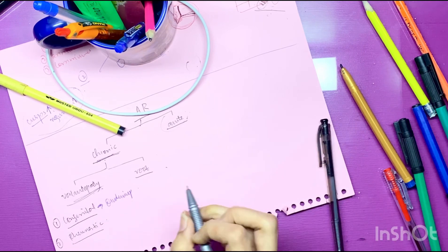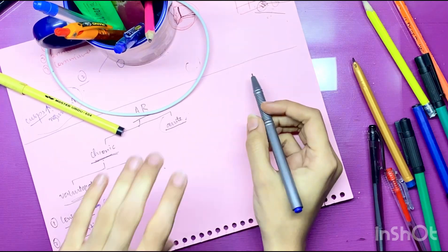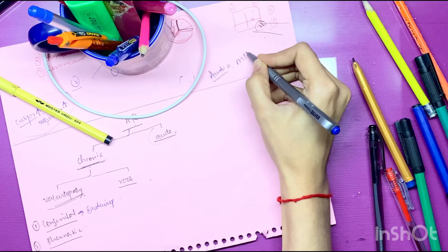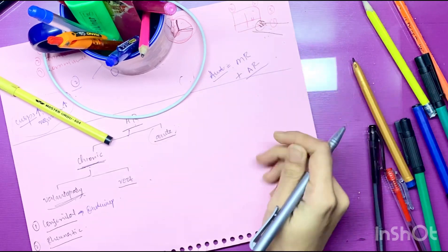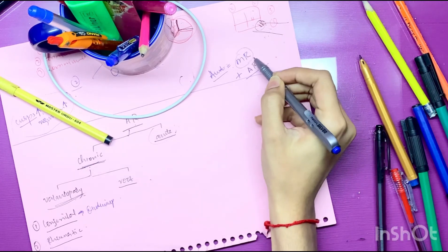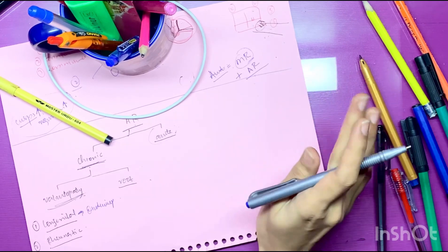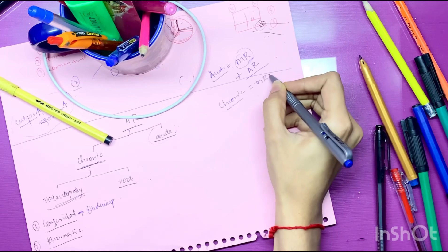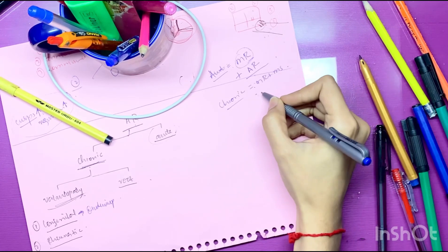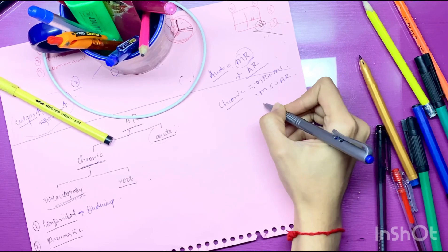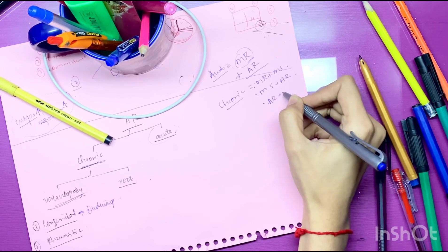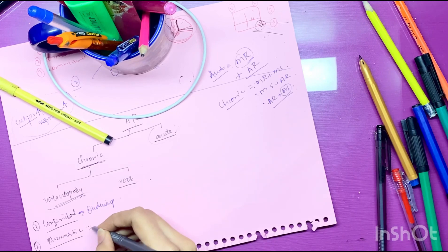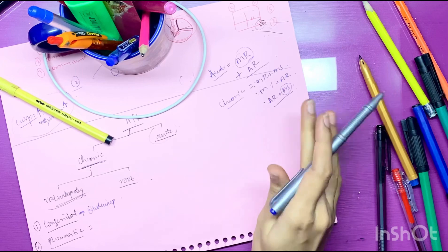The second valvulopathy heading is rheumatic fever. In acute rheumatic fever, the most common combination to remember is mitral regurgitation plus aortic regurgitation. In chronic rheumatic fever, the most common combination is mitral regurgitation plus mitral stenosis. The second most common combination is mitral stenosis plus aortic regurgitation. The third combination is aortic regurgitation plus aortic stenosis — aortic stenosis being the least common valvulopathy in rheumatic disease.